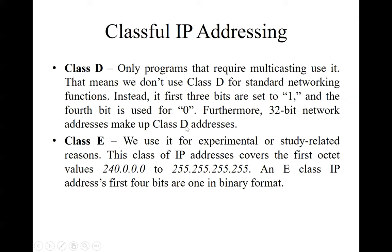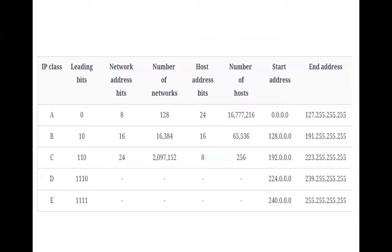The first three classes play a major role for various organizations based on their scale. Class A is divided into 128 blocks, each block having a different Net ID. Class B is divided into 16,384 blocks.